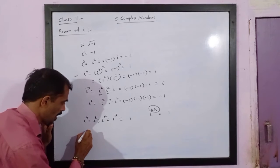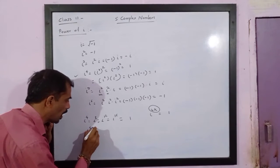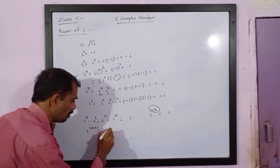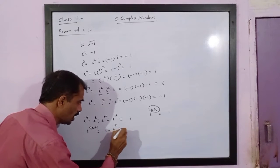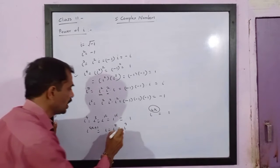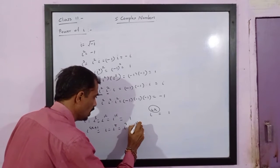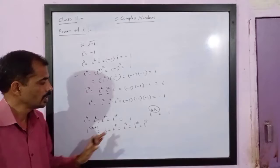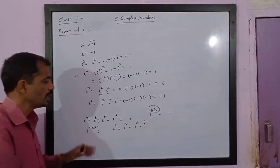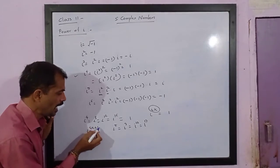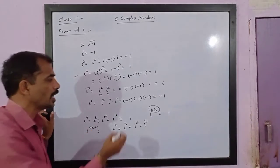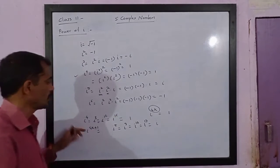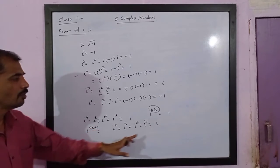If you take i raised to 4k plus 1, this will always equal i. For example, i raised to 5 equals i raised to 9 equals i raised to 13 equals i raised to 17. Please note, the values go on increasing with differences of 4, and the powers are of the form 4k plus 1. The value is always i.